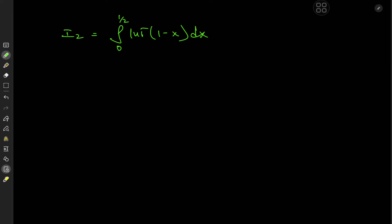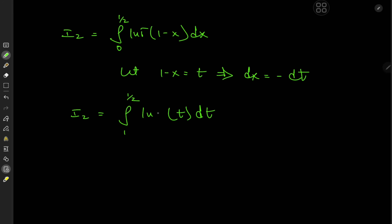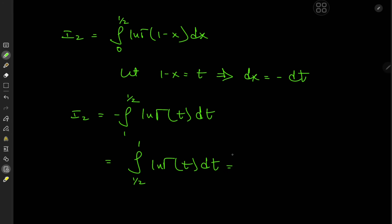For I₂ = ∫₀^(1/2) log(Γ(1−x)) dx, we let 1−x = t, so dx = −dt. The limits go from 1 down to 1/2, and flipping them gives I₂ = ∫_(1/2)^1 log(Γ(t)) dt. This equals ∫₀^1 log(Γ(t)) dt − ∫₀^(1/2) log(Γ(t)) dt.